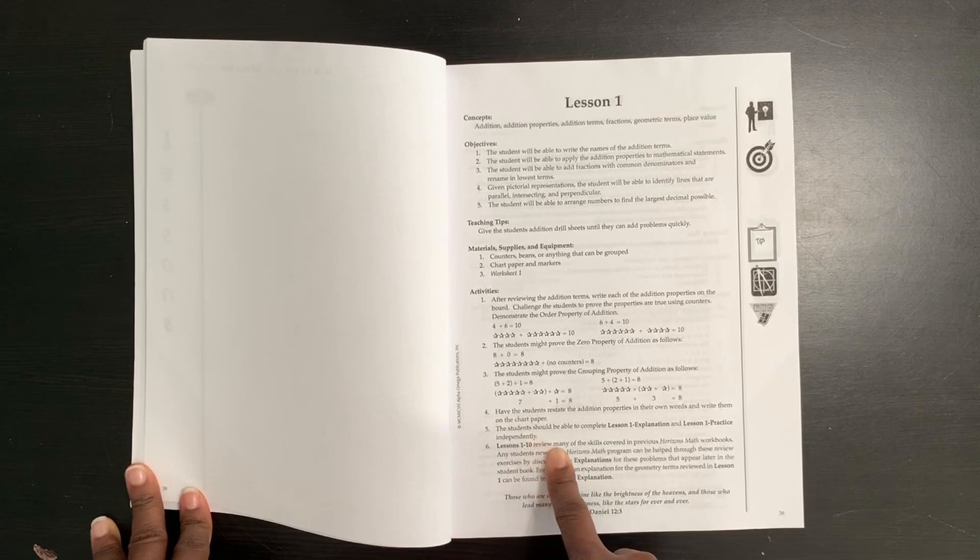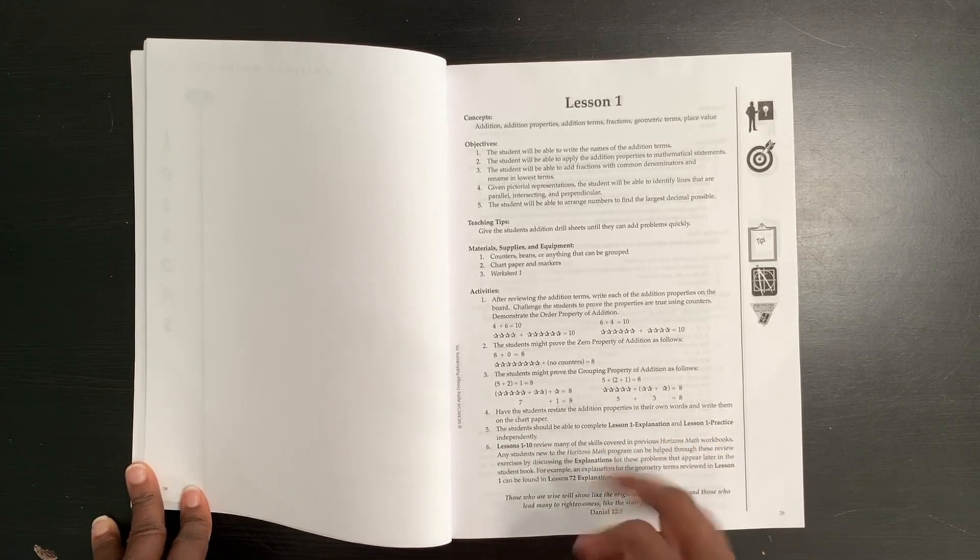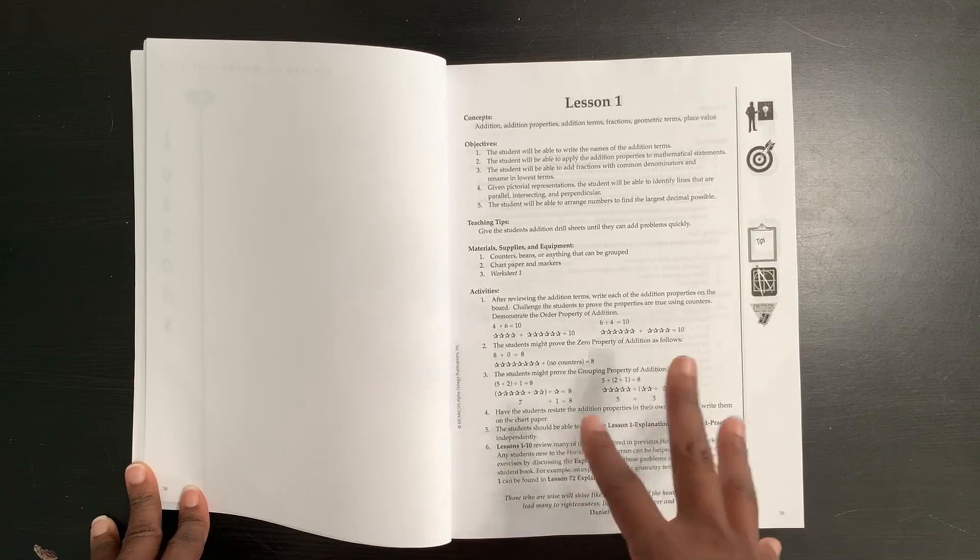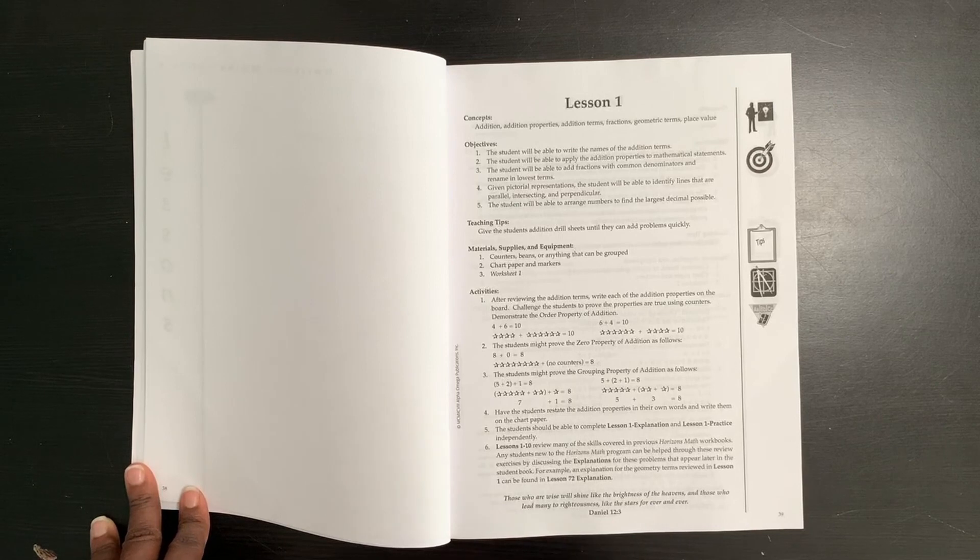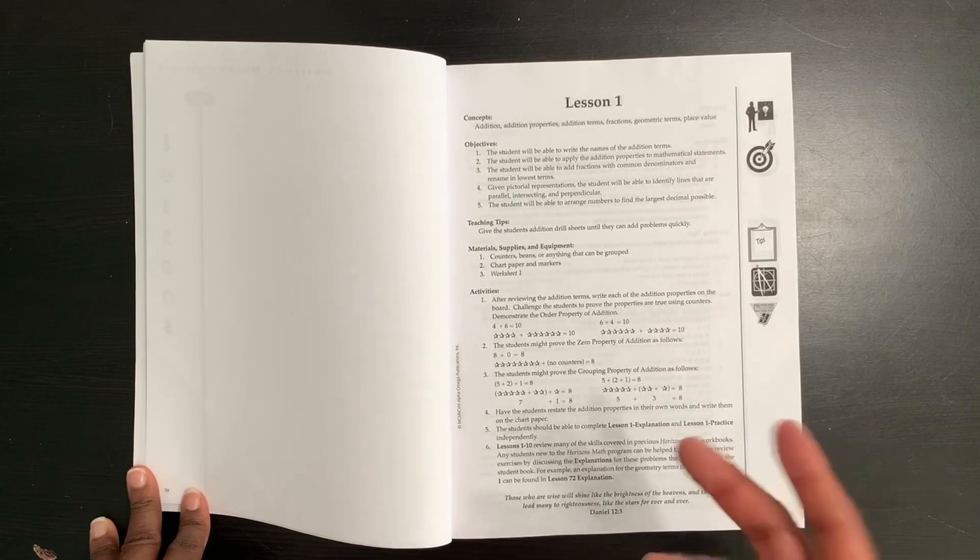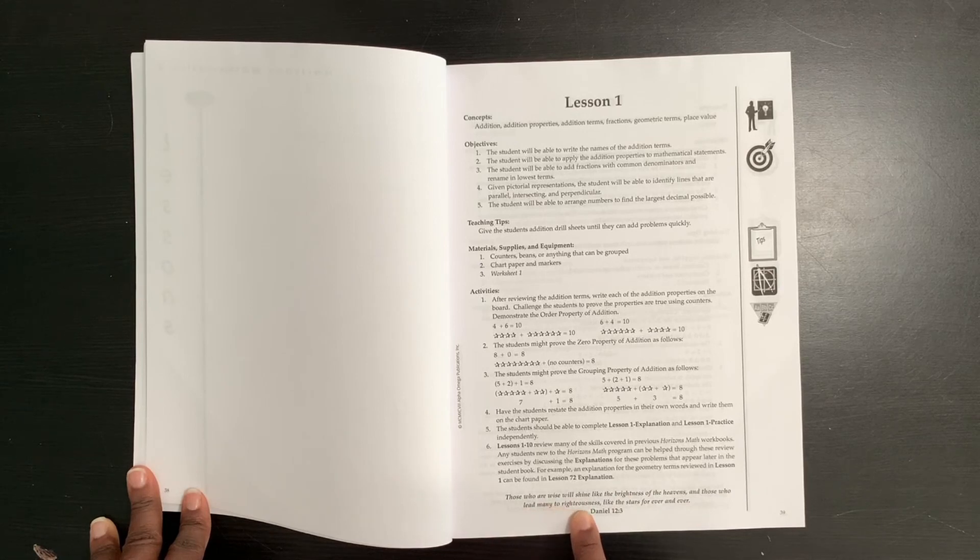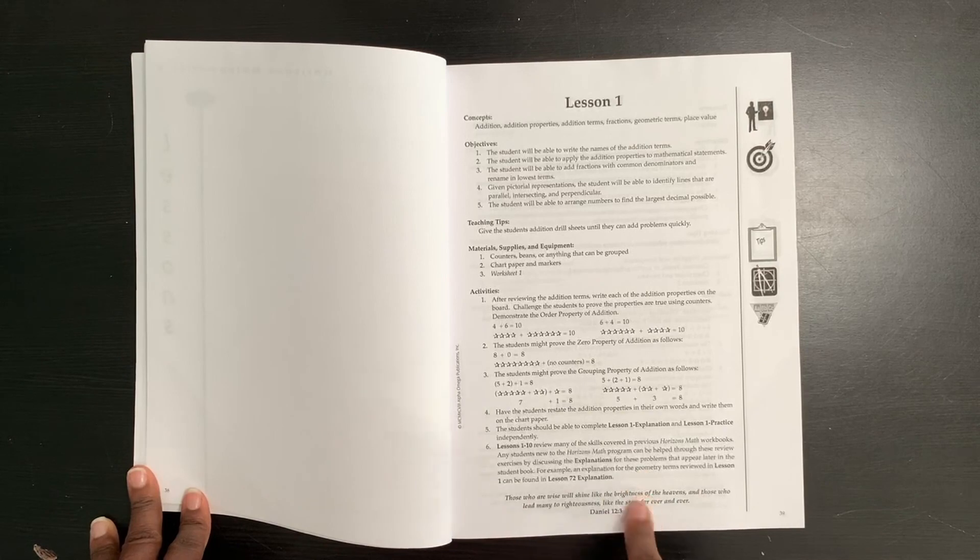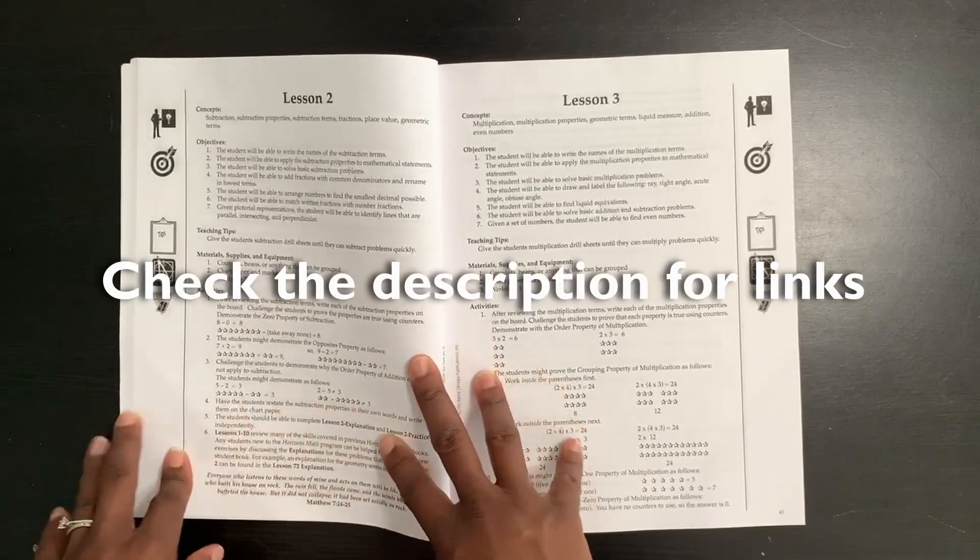This says lessons one through 10 review many of the skills covered in previous Horizons math workbooks. And that is so true. Horizons math does a spiral approach. It does a heavy review just like Saxon math does. And so the first 45 to 50 lessons of this curriculum is all review from the previous level, level four. So here is your scripture reference or your maxim or your proverbs here. It says those who are wise will shine like the brightness of the heavens and those who lead many to righteousness like the stars forever and ever. This is Daniel chapter 12, verse three. You're going to find that in all of these lessons. All right, moving on.